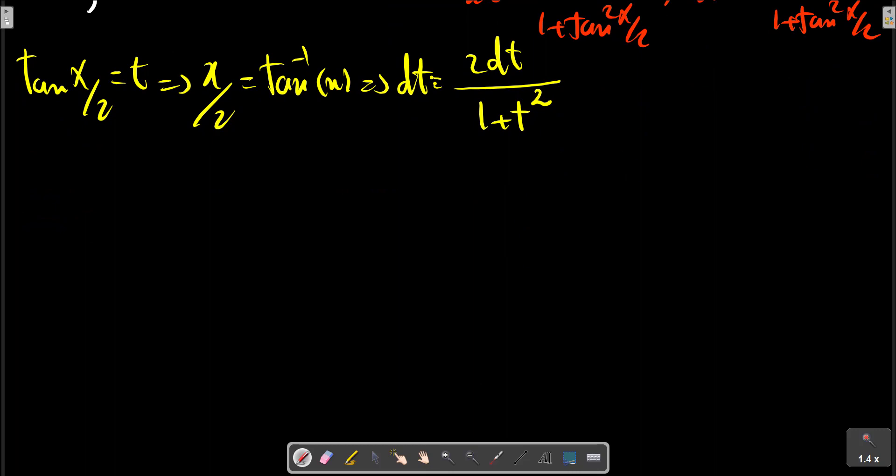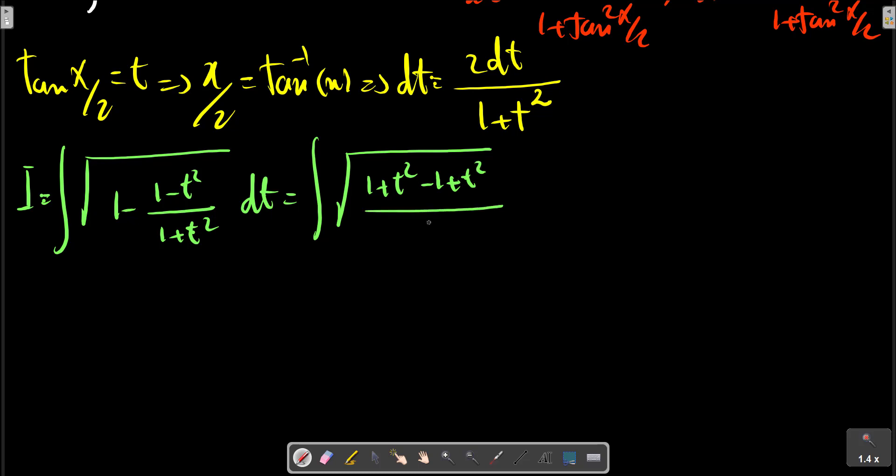So we can write this relation for our integral. One plus t two minus one plus t two, multiply to tt we have writing.